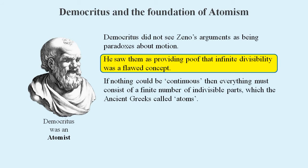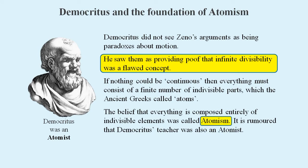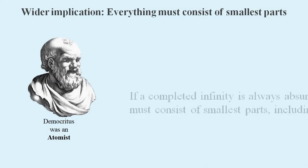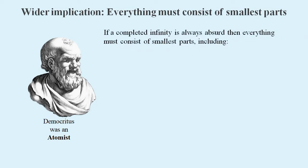Democritus believed that if nothing could be continuous, then everything must consist of a finite number of indivisible parts, which the ancient Greeks called atoms. And this belief was called atomism.